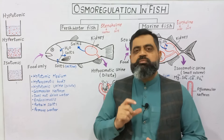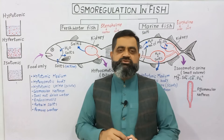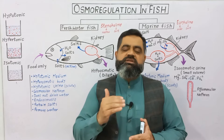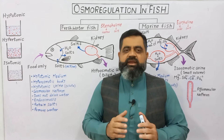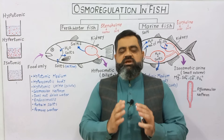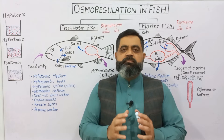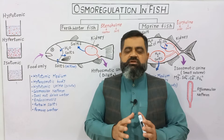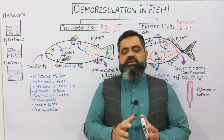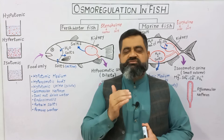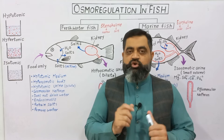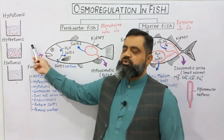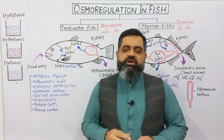If we put an animal cell in a hypotonic solution, water tends to enter inside the cell and the cell will burst due to the higher pressure of the water. This is very dangerous for animals which live in fresh water, because fresh water is usually hypotonic. The second term is hypertonic — hyper means more, tonic means solutes or salts.